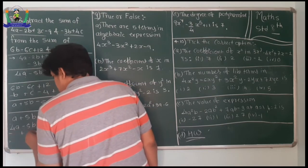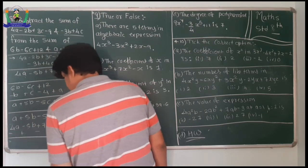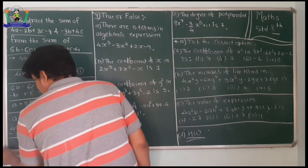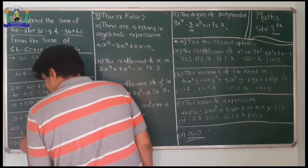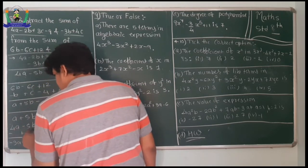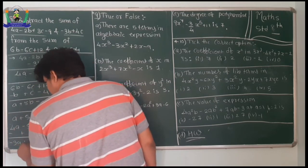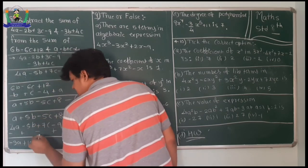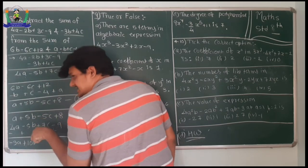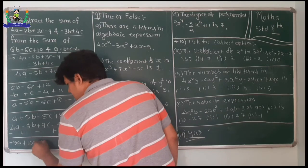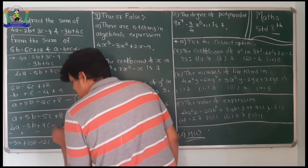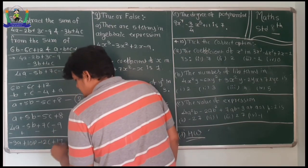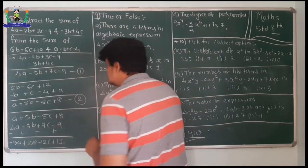Performing the subtraction - change the signs of Sum 1: minus 4a becomes plus, giving a minus 4a equals minus 3a; plus 5b plus 5b gives 10b; minus 5c minus 7c gives minus 12c; 8 plus 9 gives 17. So the final answer is minus 3a plus 10b minus 12c plus 17.